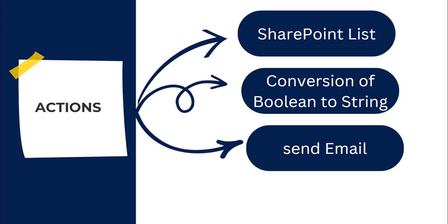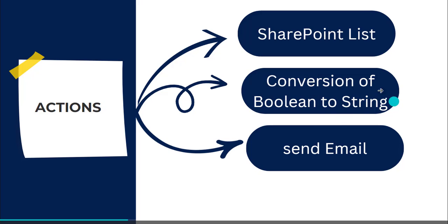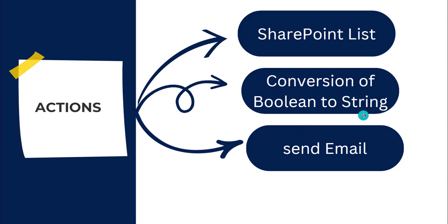These are the different actions that we are going to use in our flow. First we will create a SharePoint list with a column that has yes or no data type. After that in our flow we will see how to convert the boolean value to string value, and finally we will send the email to the particular user.